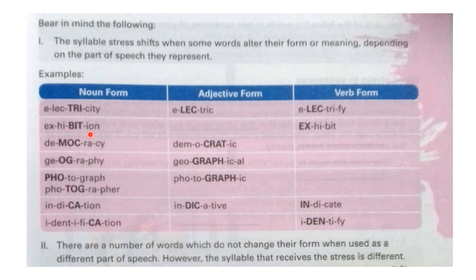The noun form here is 'exhibition'. Again, you find from right to left the stress on the second syllable. Its verb form, 'exhibit', falls on the third from the right. Next comes 'democracy' — that is the noun form — and the stress falls on 'mock', the third syllable from the right. The adjective form is 'democratic', and it falls on the second syllable from the right.